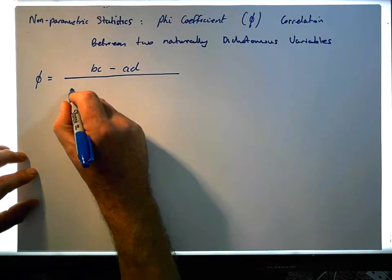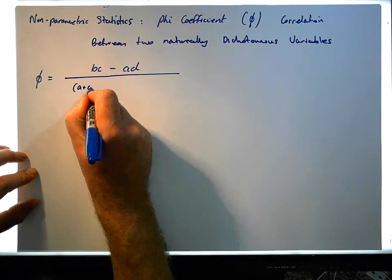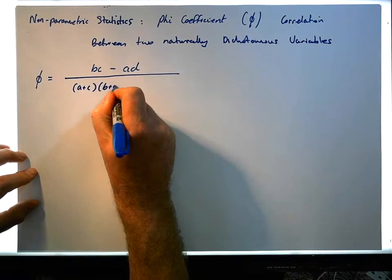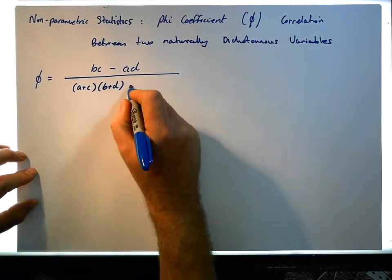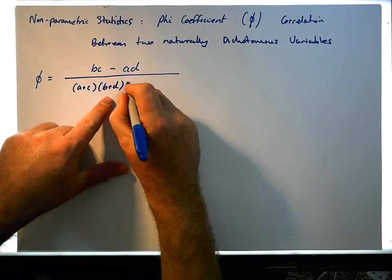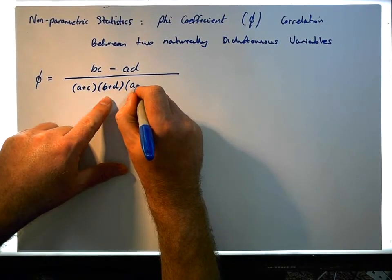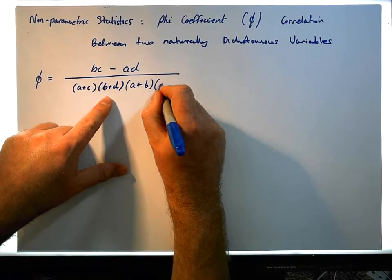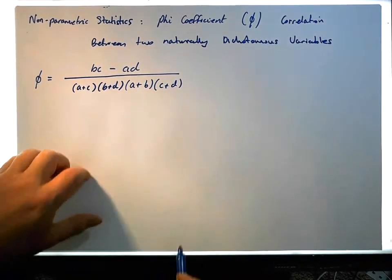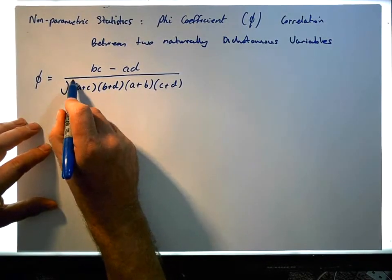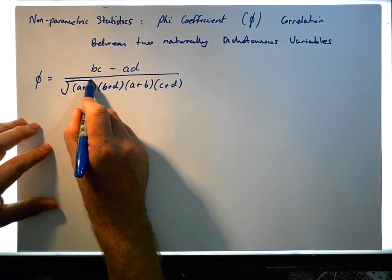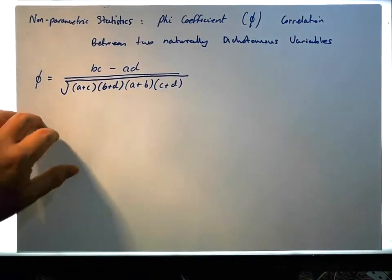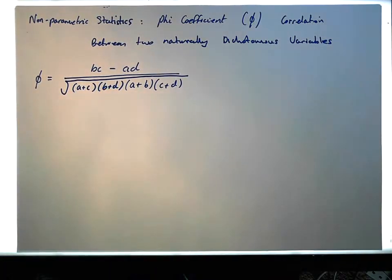Specifically, the denominator is A plus C, times B plus D — this is a typical way it would be listed — times A plus B, times C plus D. And importantly, it's the square root of this entire product of terms.